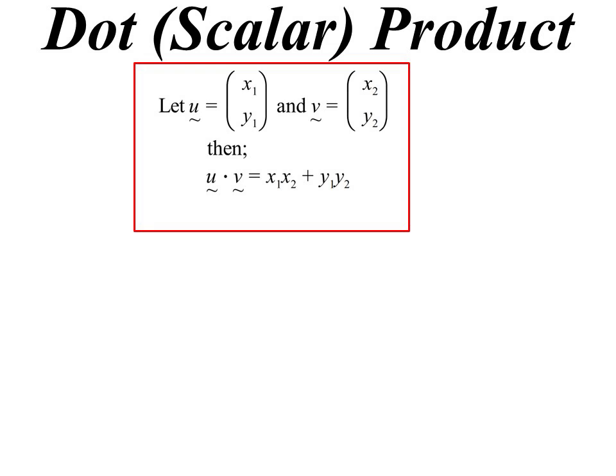The dot product: all we do is we multiply the x values together, multiply the y values together, add them. That is our dot product. So we're not multiplying these vectors together, it's a dot product. The answer is a scalar.